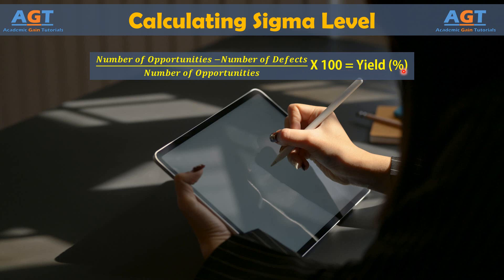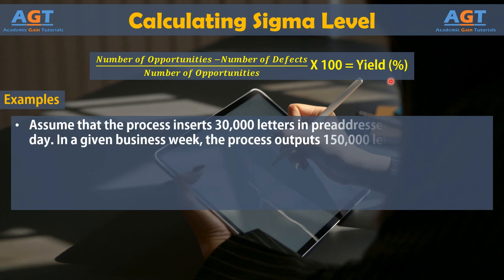Consider a process in a marketing department that distributes letters to customers or prospects. For the purposes of the example, imagine that the process inserts 30,000 letters in pre-addressed envelopes each day. In a given business week, the process outputs 150,000 letters.